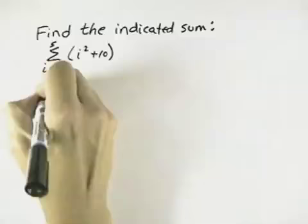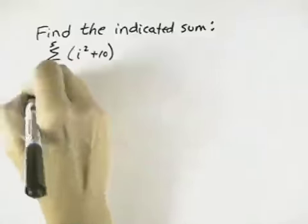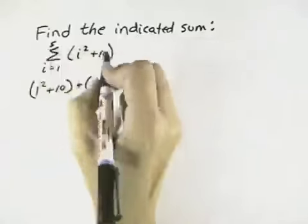So when i equals 1, we have 1 squared plus 10. And we're adding them together. Summation means add them up.